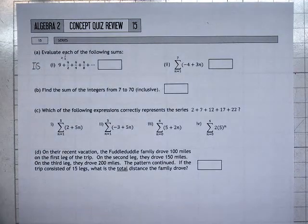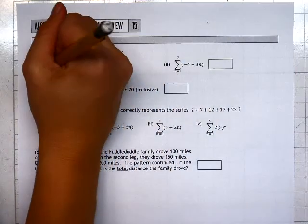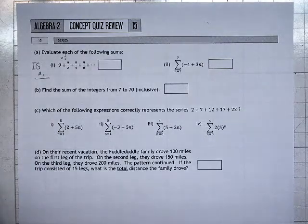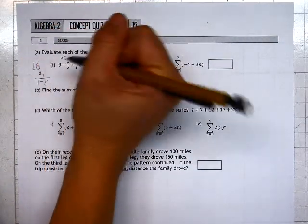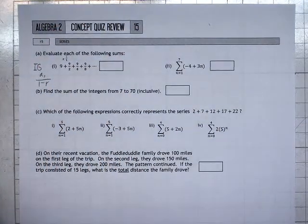And the infinite geometric has a formula. The formula is A sub 1, which is the first term, over 1 minus R, which is the multiplier of the series.